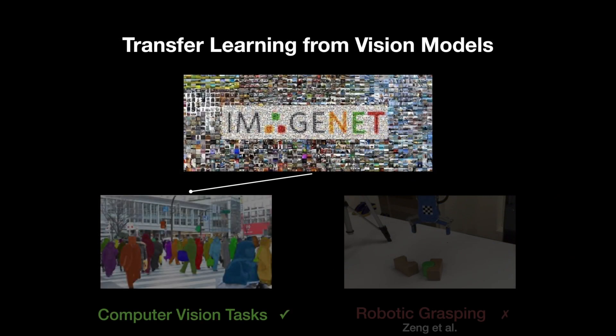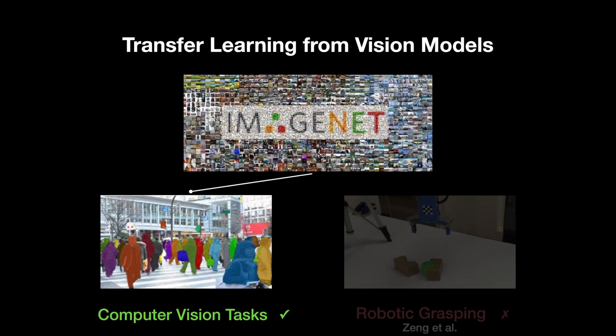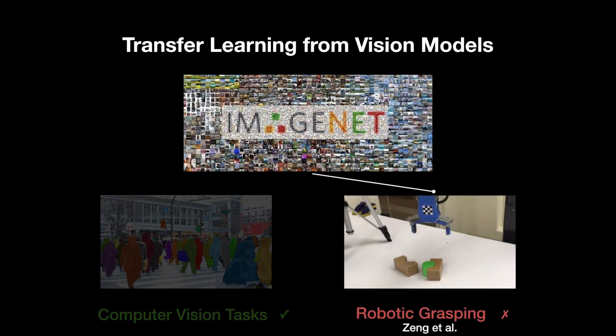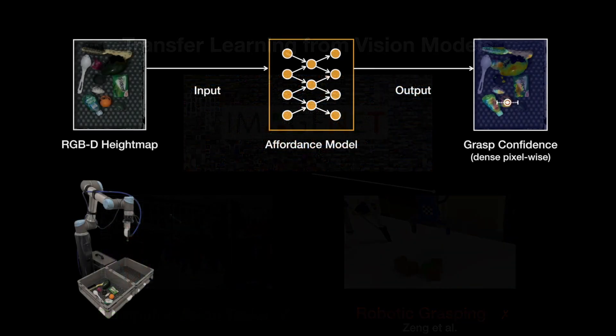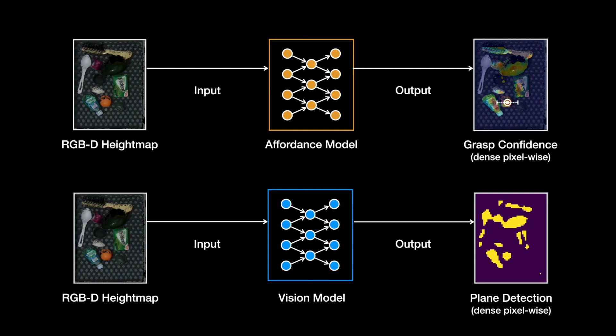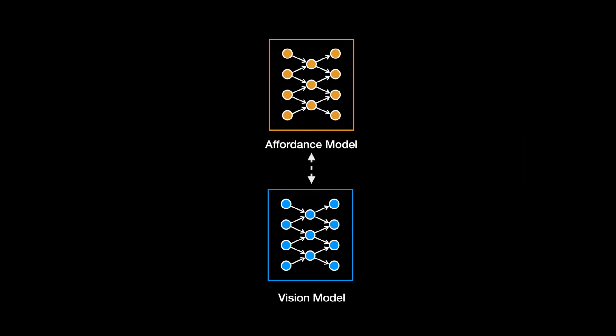In computer vision, transfer learning has been adopted to address the above problems and enables impressive applications such as instance segmentation. However, previous works show that such success cannot be reproduced in robotics applications. Our key observation is that affordance models and vision models that predict dense output share the same input-output dimension, which offers a new chance for transfer learning.